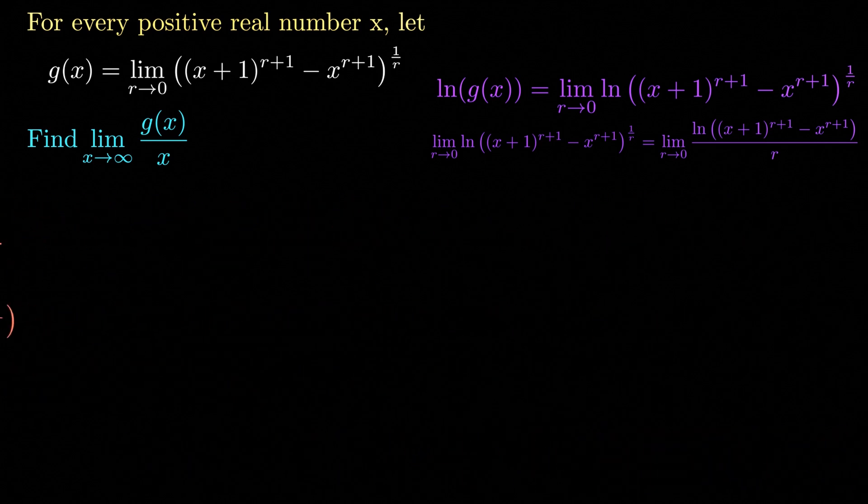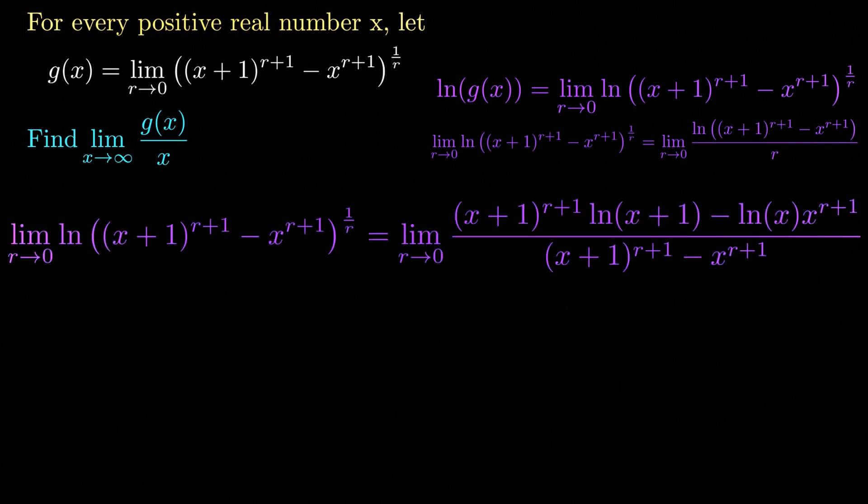This allows us to rewrite our limit as the limit as r approaches 0 of x plus 1 raised to r plus 1 times the natural logarithm of x plus 1, minus the natural logarithm of x times x raised to r plus 1, all divided by x plus 1 raised to r plus 1 minus x raised to r plus 1.